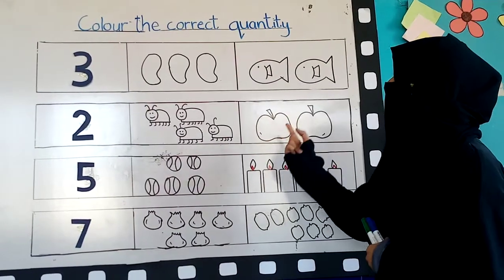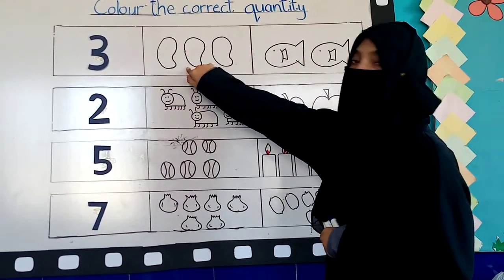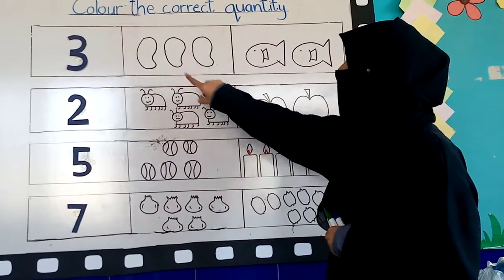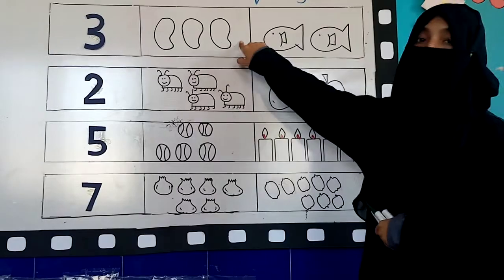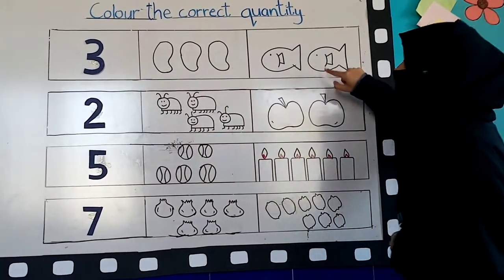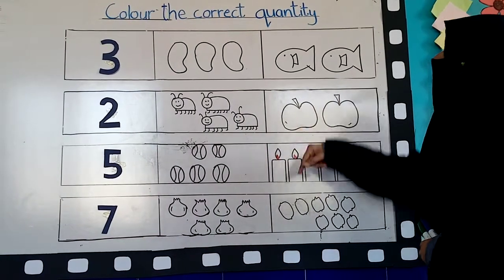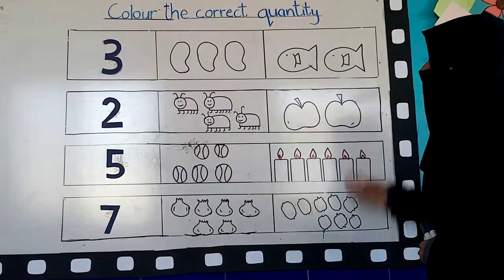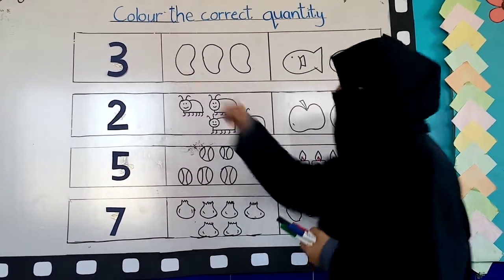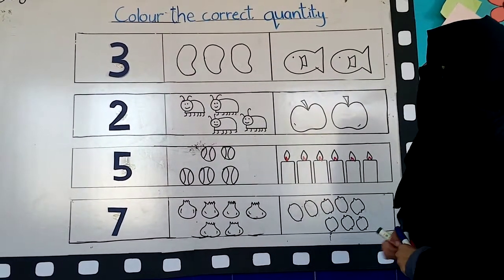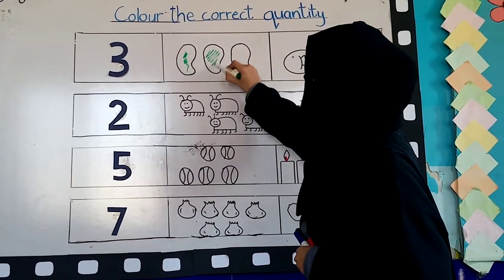First we have to look at the number and count these things. Count with your teacher — how many mangoes are here? One, two, three. How many mangoes are here? Three. And how many fishes are here? One, two. How many fishes are here? Two. The number shown is three, so we have to color these mangoes because there are three mangoes.